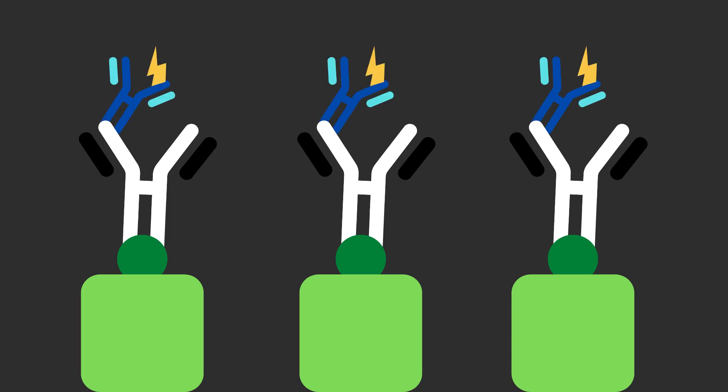Third, enzyme-conjugated secondary antibodies which bind to the first set of antibodies are added to the micro-well. Fourth and finally, a substrate specific for the enzyme which is linked to the secondary antibody is added, and the enzyme then converts this substrate into an observable signal.